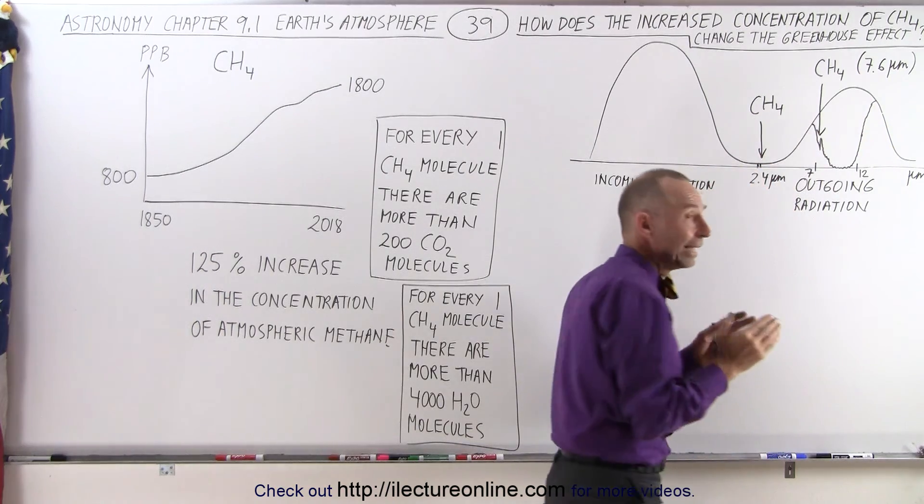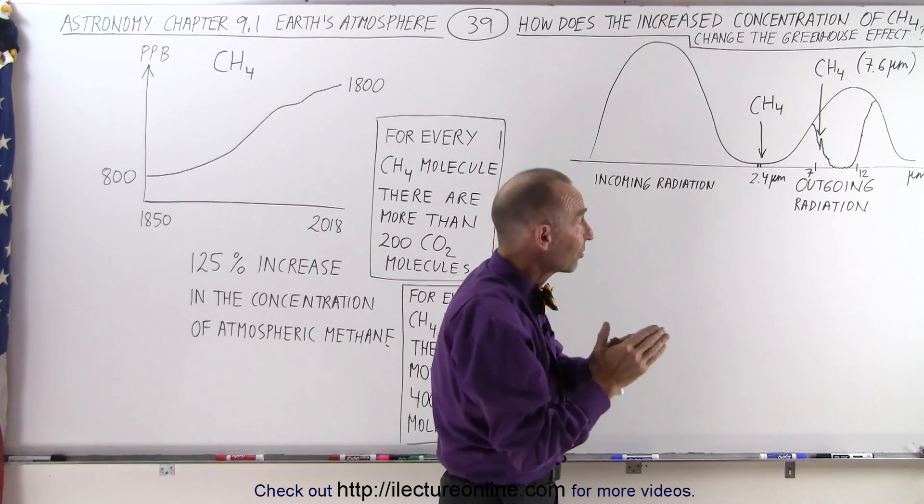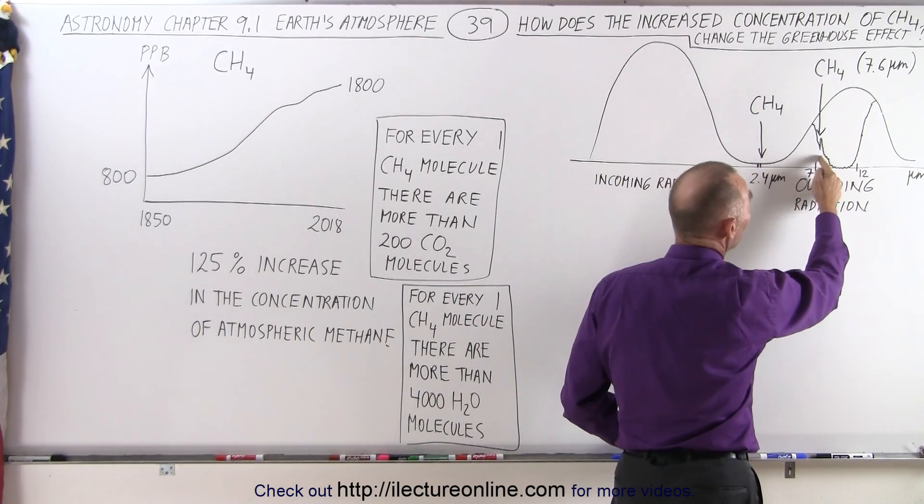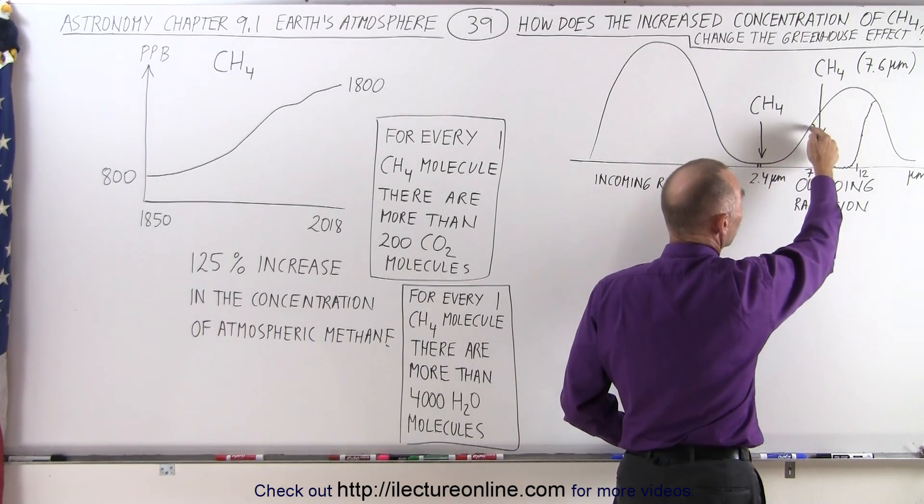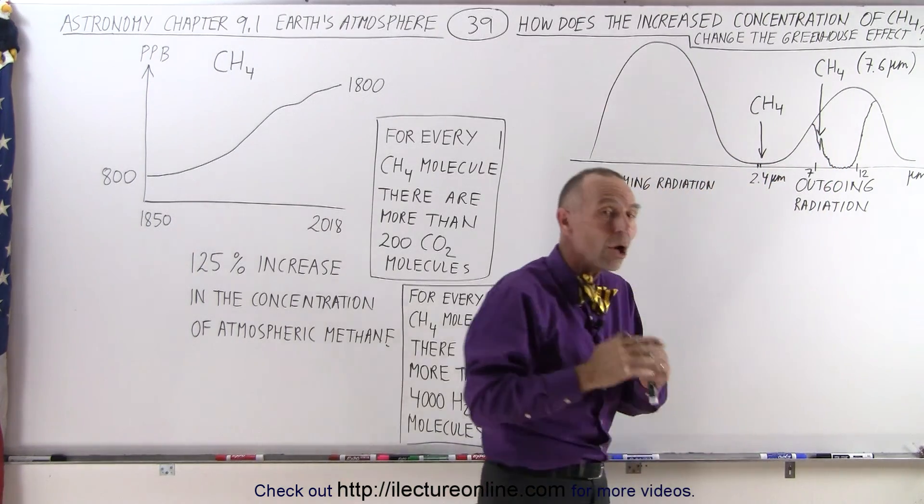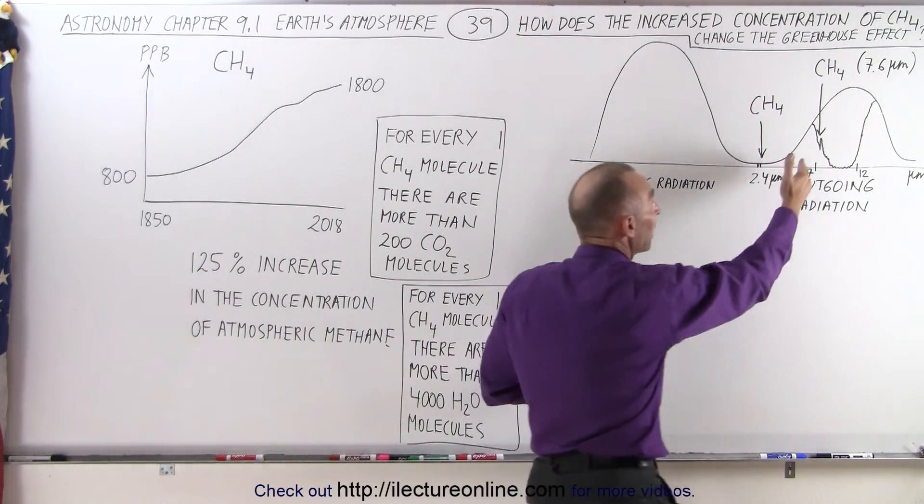So carbon dioxide is very active in the range from about 14 to 16 micrometers. But notice that methane holds back part of this radiation right here. So not only does water vapor hold back that radiation, but methane as well. But all of it, quite a bit of it, still makes it to space.